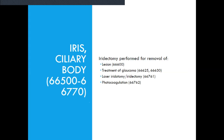Now we're going to talk about the iris and the ciliary body. You're going to find that on page 578 of your step-by-step. The iris is the colored portion of the eye. The ciliary body is located behind the iris and produces the aqueous humor. The iris and ciliary body section contains codes for lesions and treatment of glaucoma.